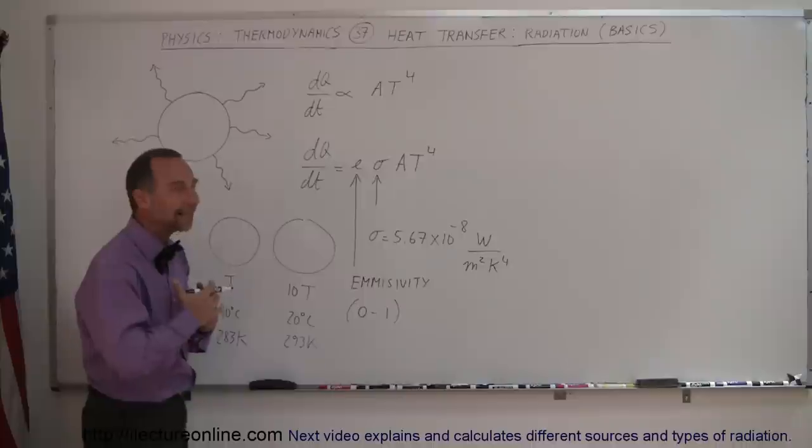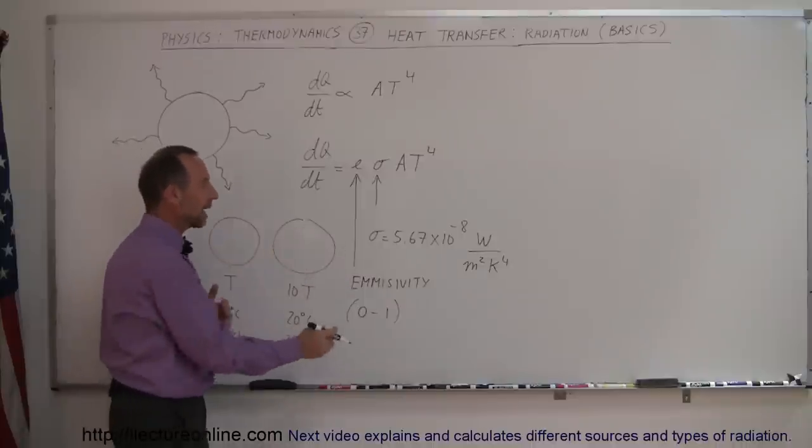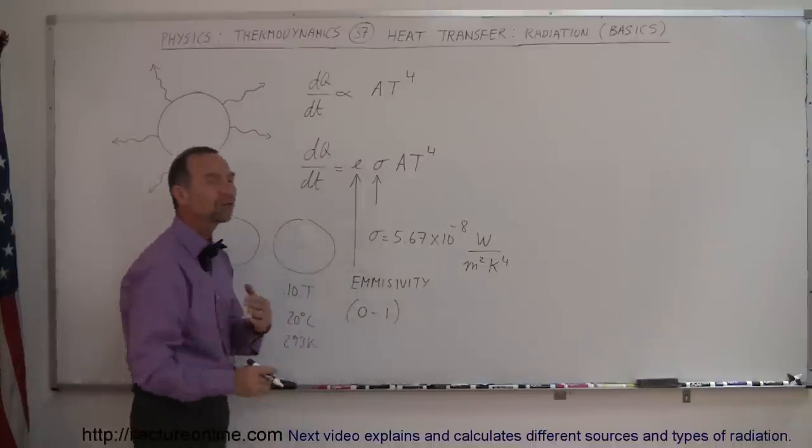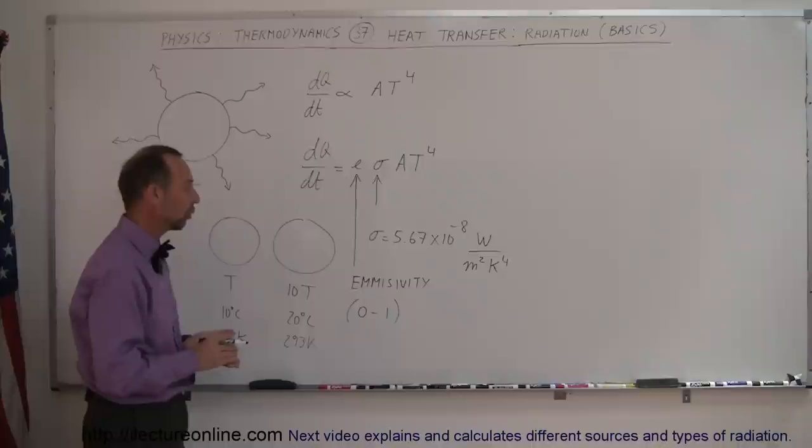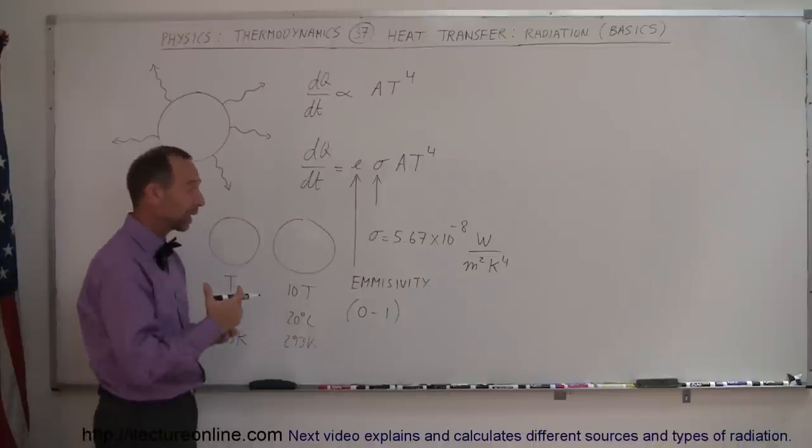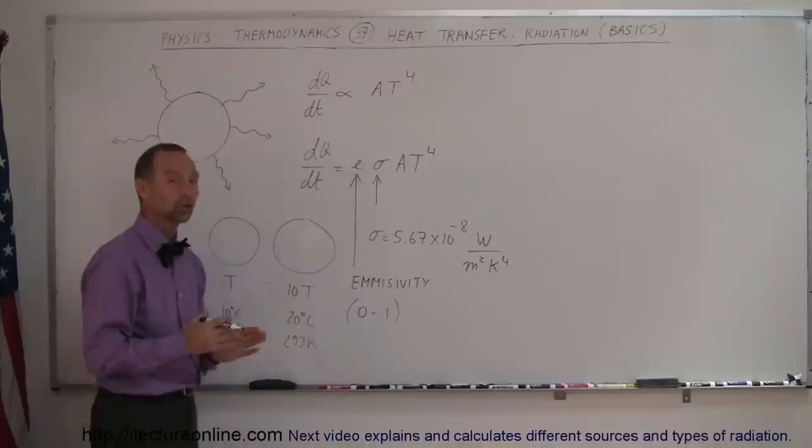Objects that readily radiate out energy, they have an emissivity close to 1. And most materials are indeed close to 1. When an object doesn't emit radiation readily, then it has an emissivity much closer to 0.